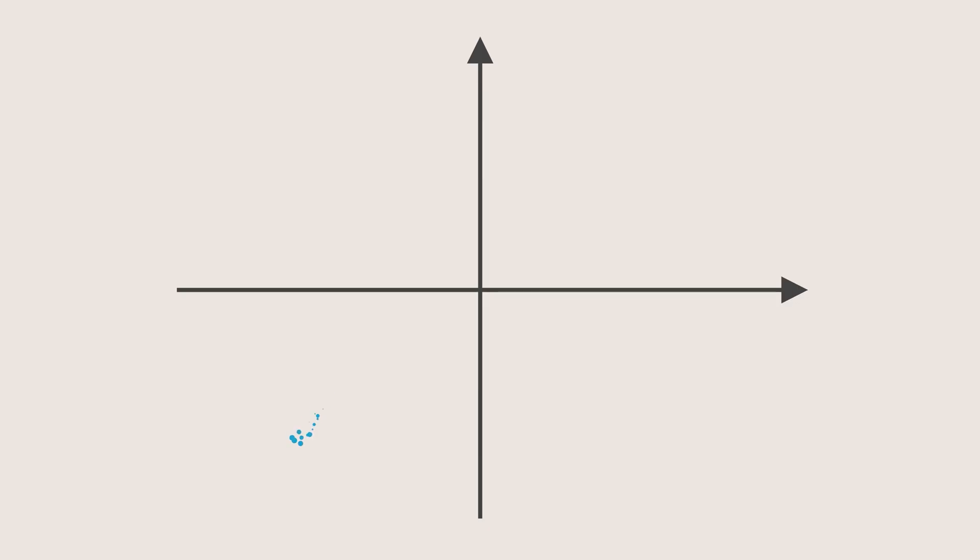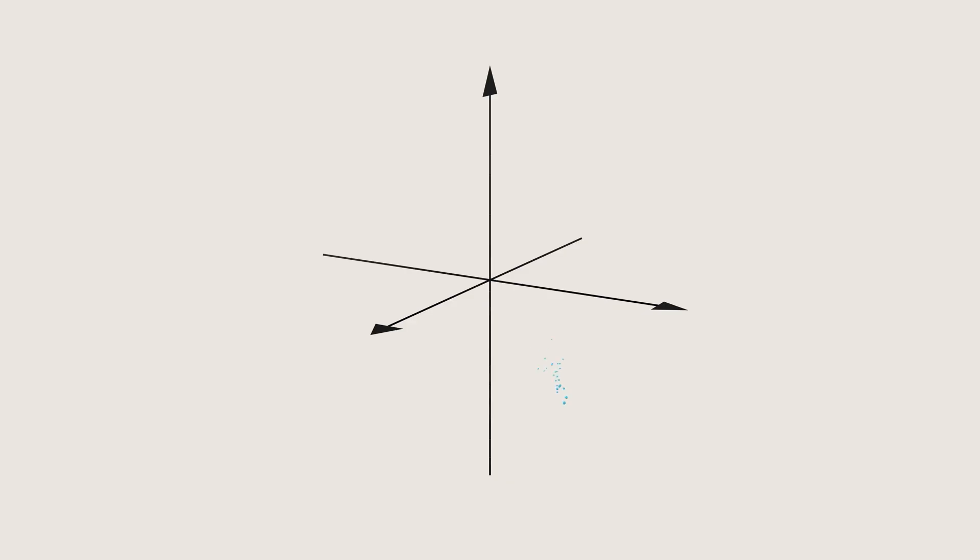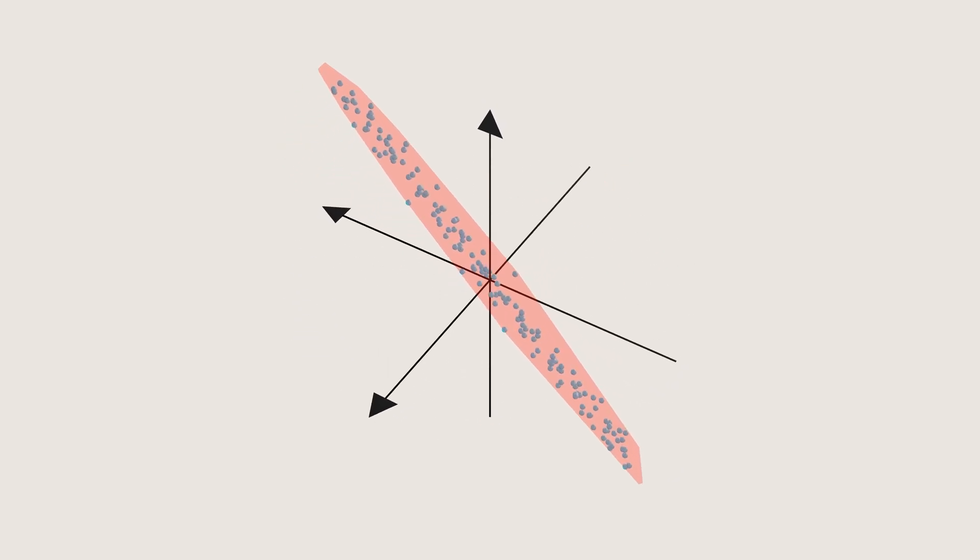Now imagine we have these data points and plot them on a 2 dimensional plane. You will notice that most of the data points are actually clustered together in a small region rather than being spread out everywhere. Similarly in the higher dimensions, most of the data tends to be concentrated in certain regions rather than uniformly filling the entire space.